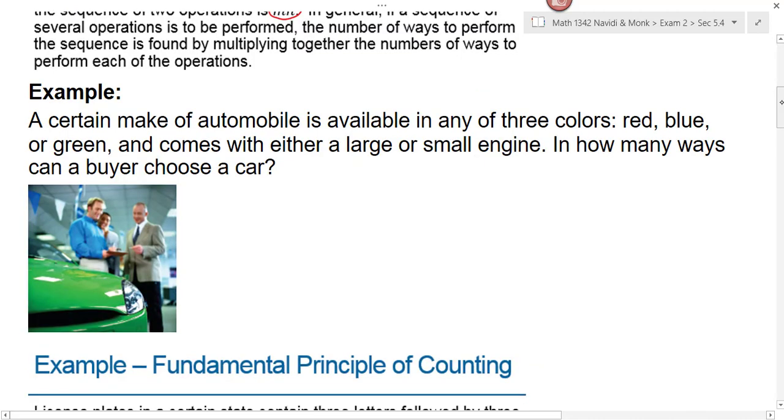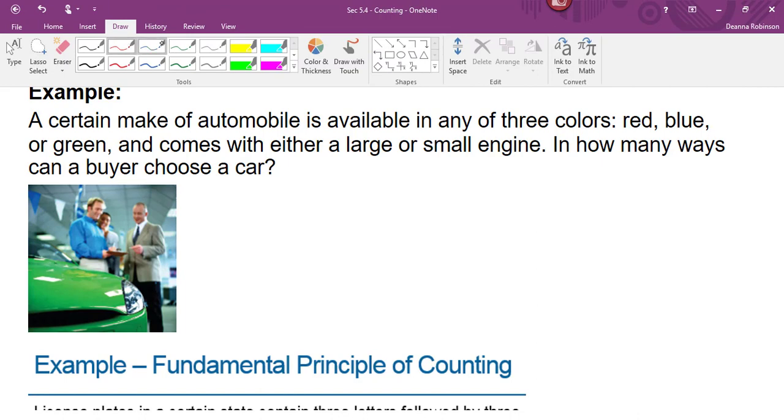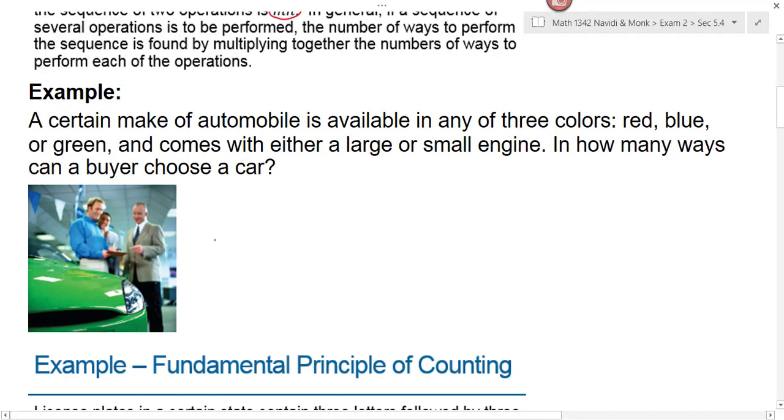In this example problem, we're told that a certain make of automobile is available in any of three colors—red, blue, or green—and comes with either a large or a small engine. In how many ways can a buyer choose a car? When you're using this counting technique, what I recommend you do is you actually write down blanks for each of the operations and underneath the blanks write in what it is that you're filling in. So we have a choice on color and on engine size. How many different choices do we have for the color of the car? Three. And how many choices do we have for the engine size?